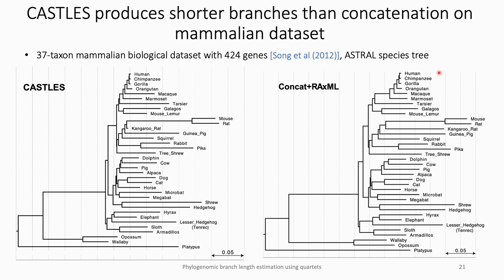Finally, here we see a comparison between CASEL and concatenation branch lengths on a mammalian biological dataset with 37 species. While the trees are similar in many branches and have similar diameter, some branches — shown with different colors — are much longer in the concatenation tree. For example, the distance between the clades containing the hominids and the root of the placental mammals is almost twice as long in the concatenation tree. While we don't know the truth on biological data, the fact that concatenation produces longer branches was also seen in simulated data where concatenation had an overestimation bias but CASEL was much less biased.